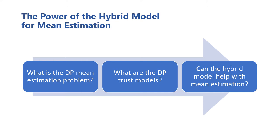Ideally, solutions in this hybrid model can outperform solutions in the classic models. This would be great since it wouldn't just improve the utility of mean estimates, but it would improve utility for any of those complex tasks that use mean estimation as a subcomponent.